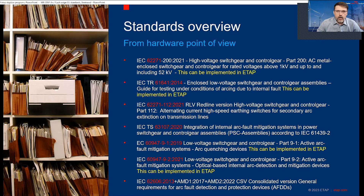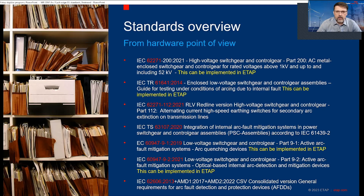From a hardware point of view, you might also look into IEC 62271, which is generally the standard about making high voltage switchgears. There is one part about internal arc classification — passive design for the switchgear. This can be implemented in ETAB. There is also technical report IEC 61641, which is the same topic but for low voltage assemblies — and you can also implement this as a check in ETAB.